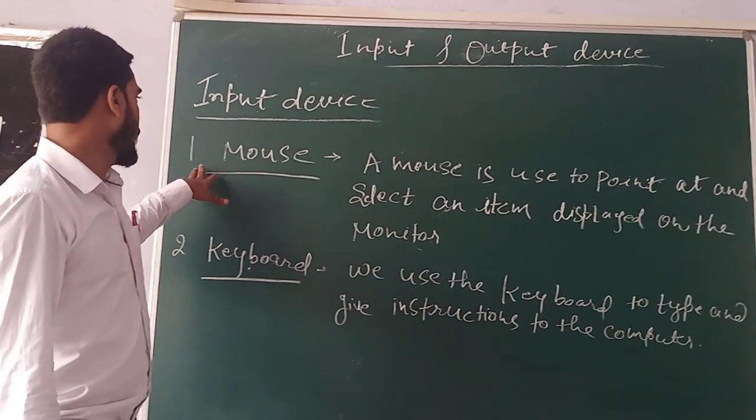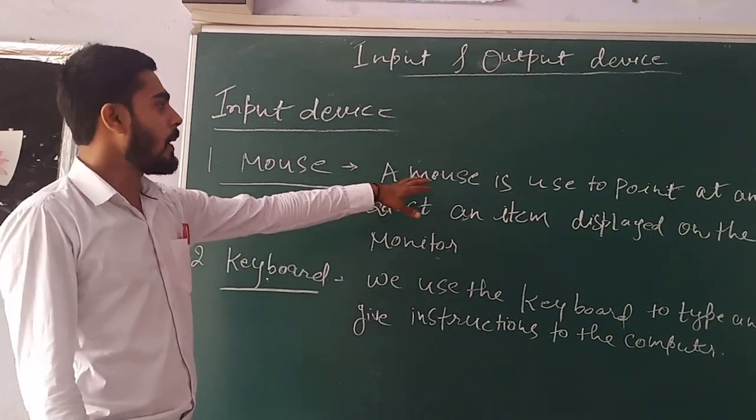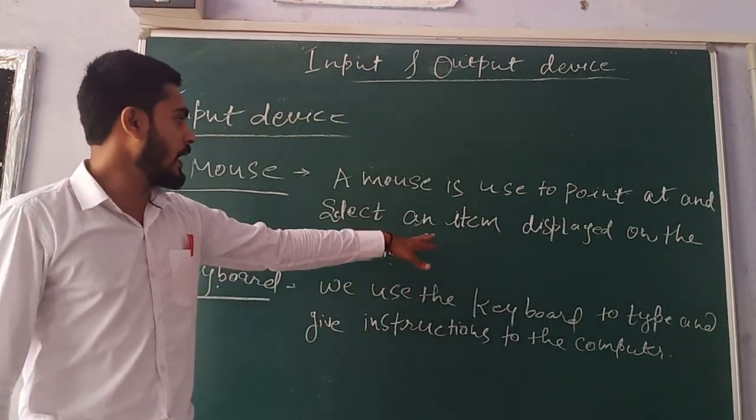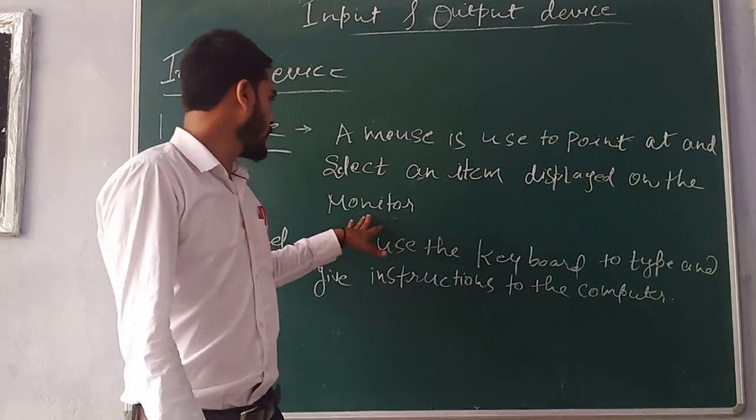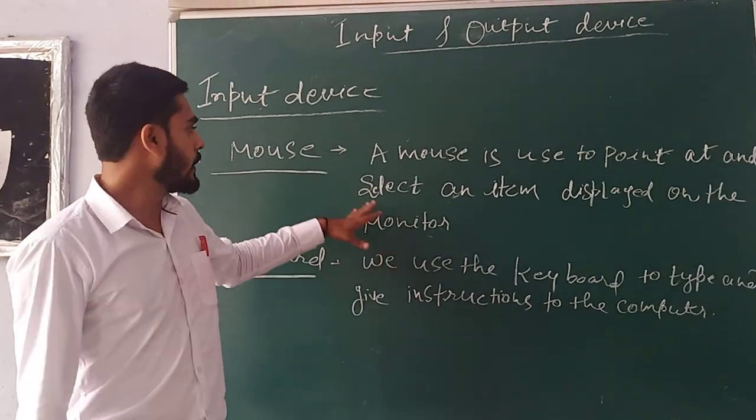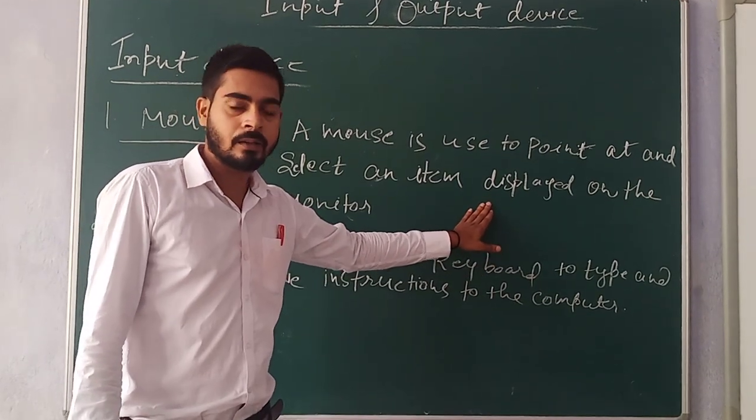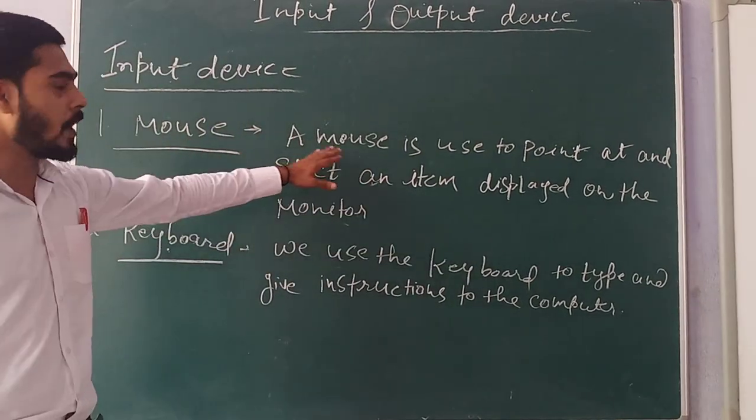Example of input device. First, mouse. A mouse is used to point and select an icon displayed on the monitor.